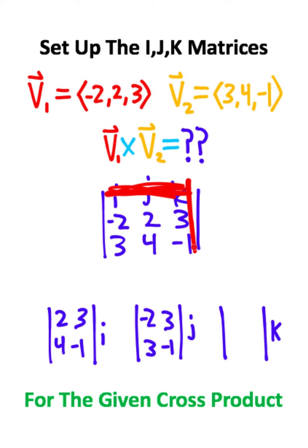Now we'll go to our k, and we'll cross off the row and the column. So we'll have negative 2, 2, 3, 4.